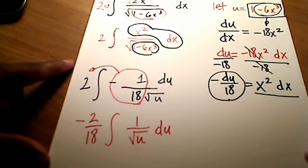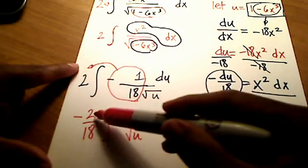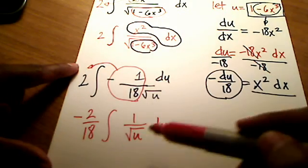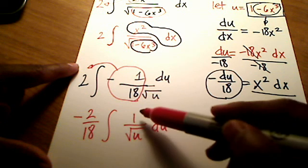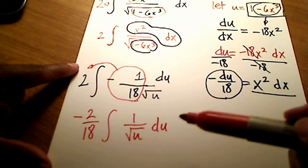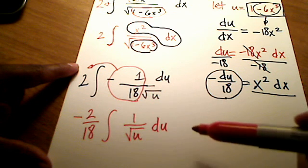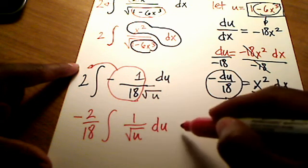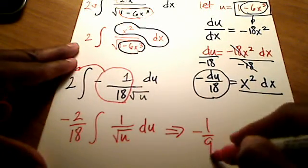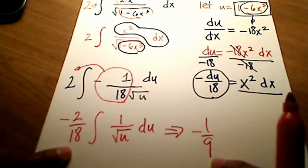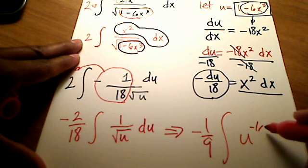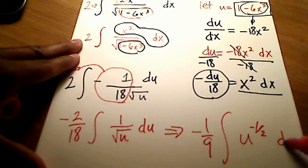Again, pause this video if I'm losing you along the way. Hey, let's clean this thing up front. That's really just a negative 1 over 9. And if you want, you can rewrite this 1 over square root of u. Since the square root can be written as an exponent of 1 half, and it's in the denominator, I can write all of this this way. Instead I can write a negative 1 over 9 out front. That's simplifying this fraction. Integral of u to the negative 1 half du.